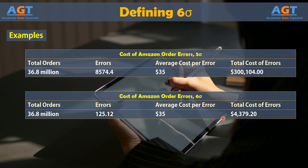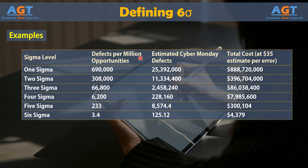Now let's look at the Amazon Cyber Monday example at other levels of Sigma. From this table we can see that at One Sigma level, there would be 690,000 errors per 1 million orders, so estimated Cyber Monday defects would be 25,392,000 and with an average cost of $35 per error, the total cost of errors would be $888,720,000. At Two Sigma level, there would be 308,000 errors per 1 million orders, so estimated Cyber Monday defects would be 11,334,400 and the total cost of errors would be $396,704,000.